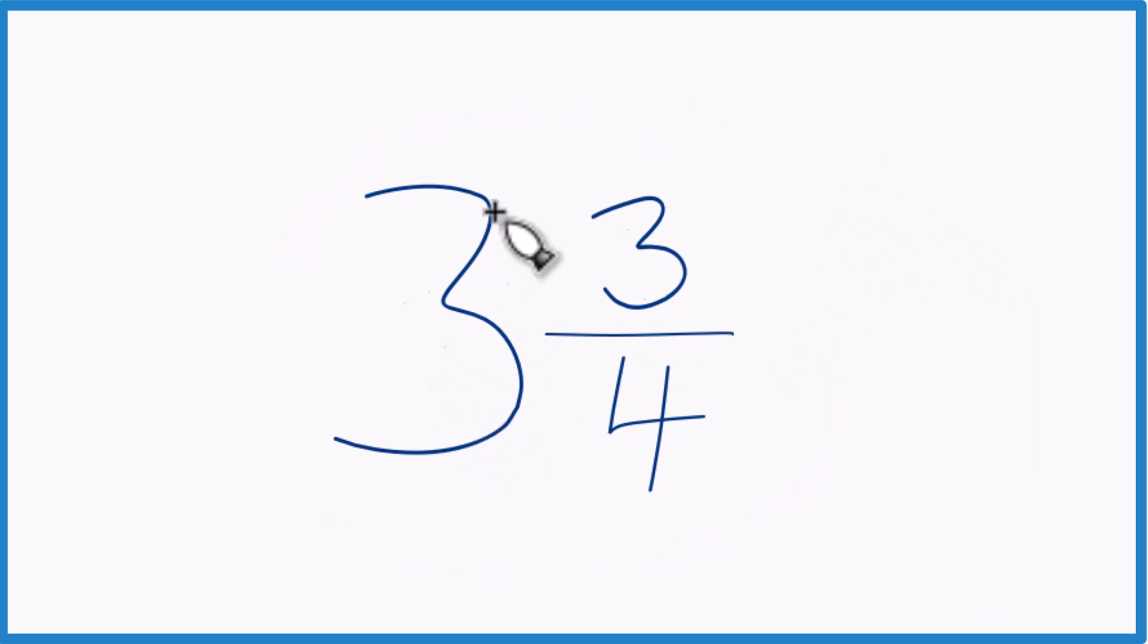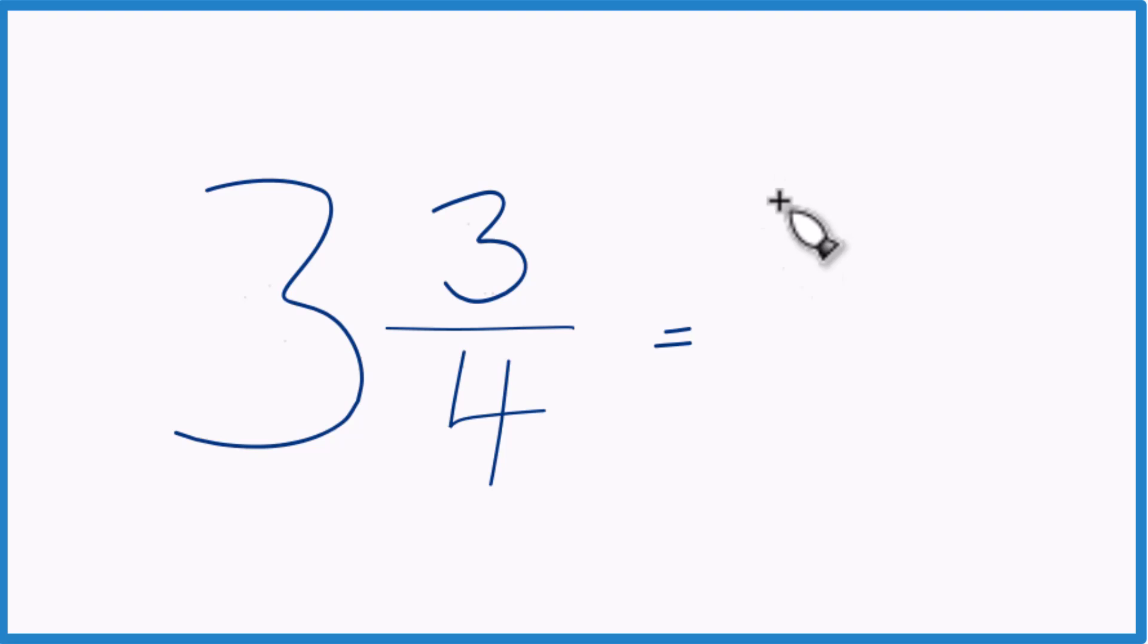We take 3, the whole number, times 4. 3 times 4 is 12. 12 plus 3, that equals 15. So that's our numerator. And then for the denominator, just bring the 4 across.